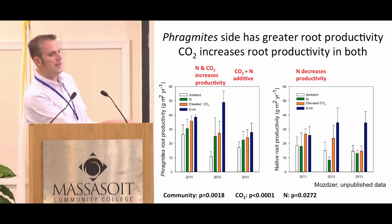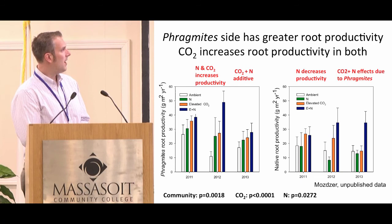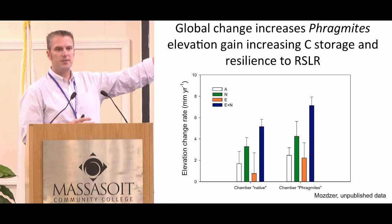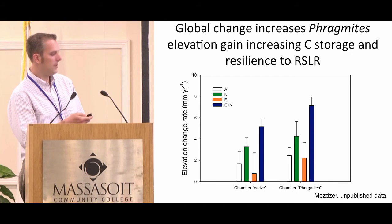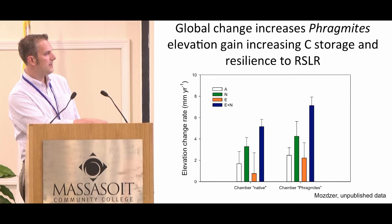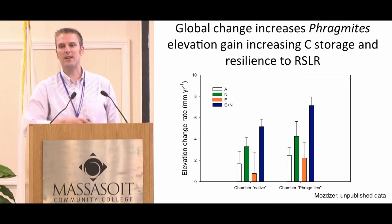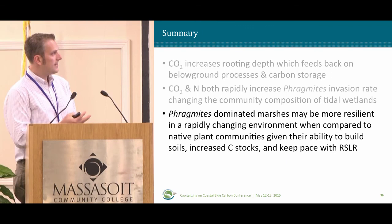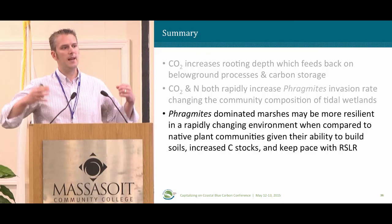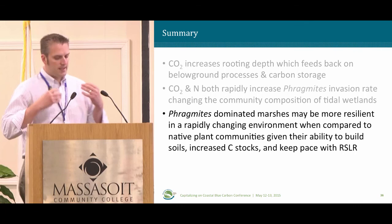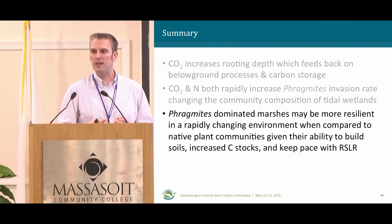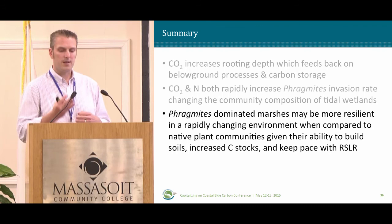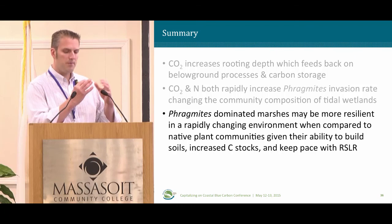Looking at surface elevation gain — cumulative elevation change normalized to millimeters per year — Phragmites supports a higher rate of surface elevation gain than the native side of the chamber. The effects on the native side are actually attributed to Phragmites overrunning it. Due to increased below-ground productivity, Phragmites is gaining more surface elevation. This suggests that in a rapidly changing environment, Phragmites-invaded wetlands may actually be more resilient to relative sea level rise, nitrogen pollution, and rising CO2 compared to native plant communities, in terms of building soils and increasing carbon stocks.